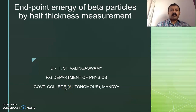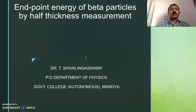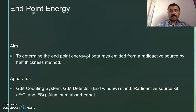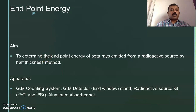Hello everyone, welcome back. In this lecture video, I will be discussing the determination of endpoint energy of beta particles by half-thickness measurement. The aim of the experiment is to determine the endpoint energy of the beta rays emitted from a radioactive source by the half-thickness method.